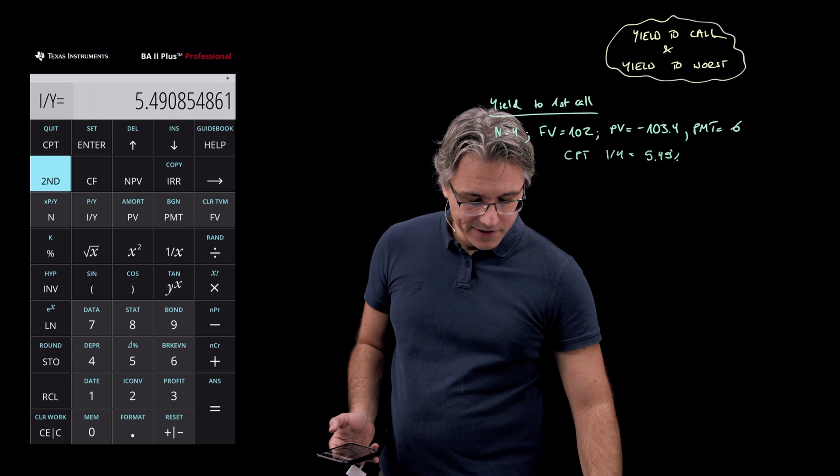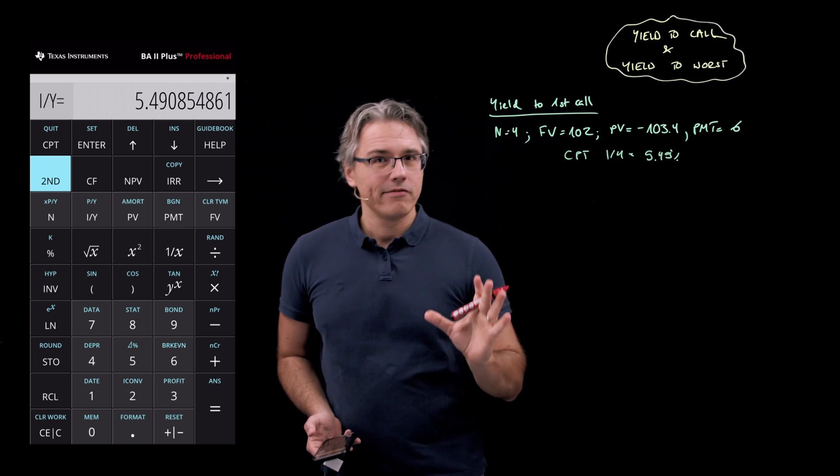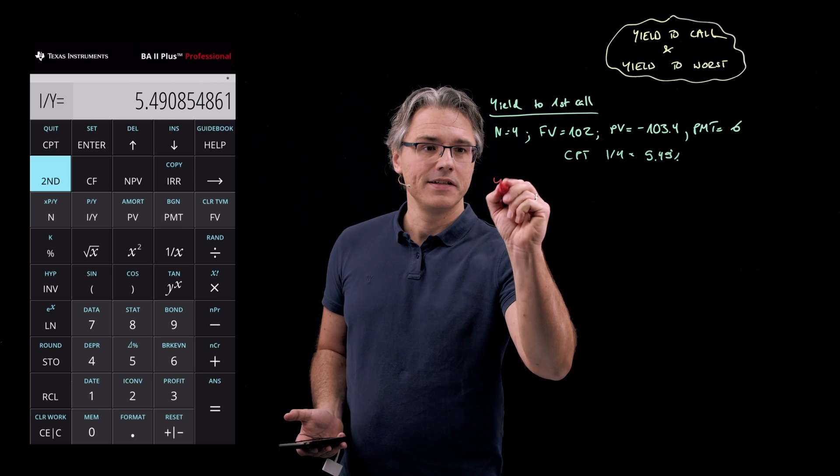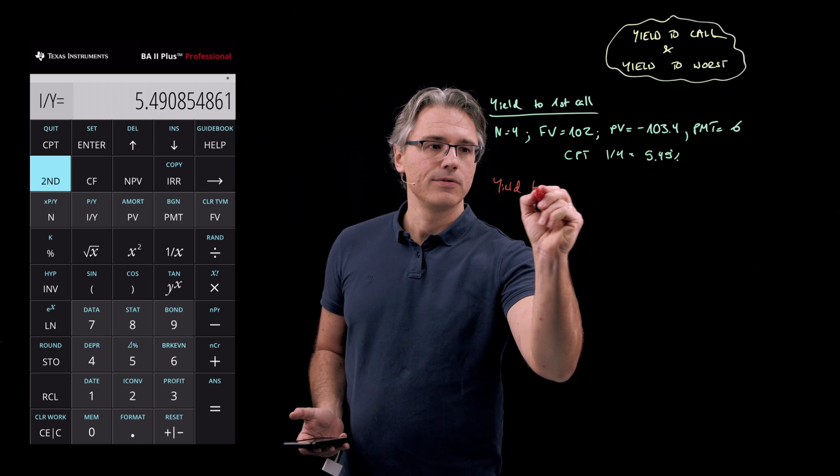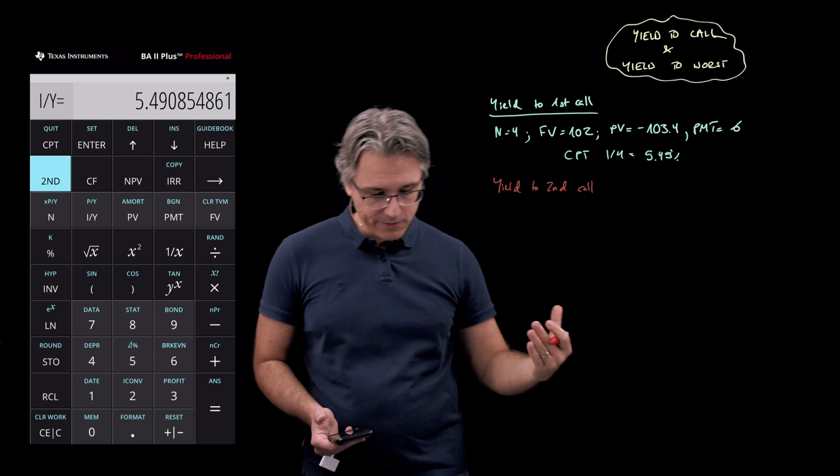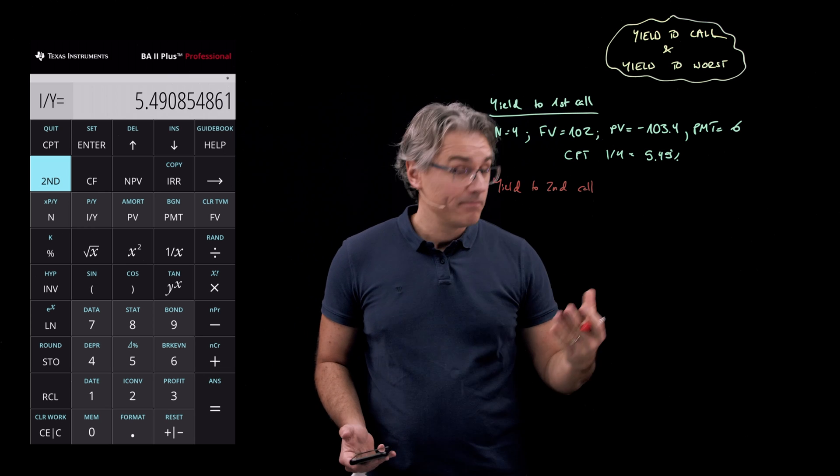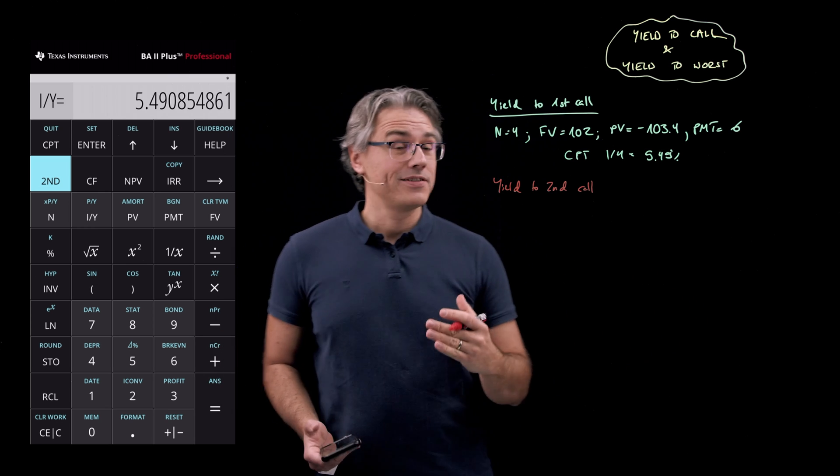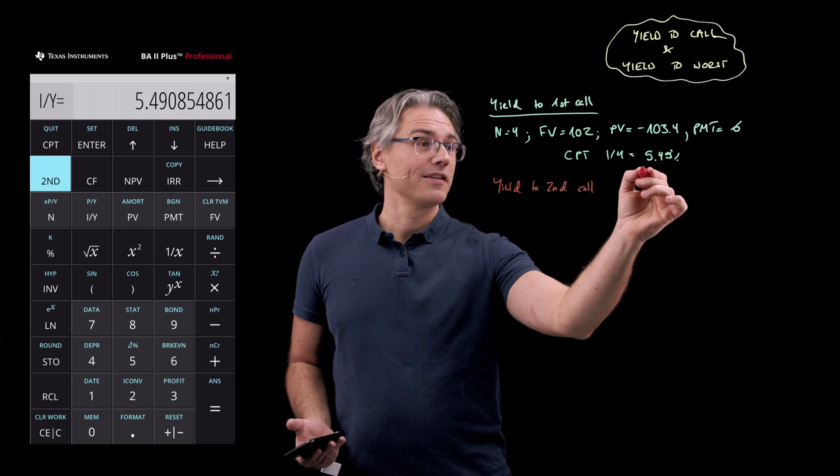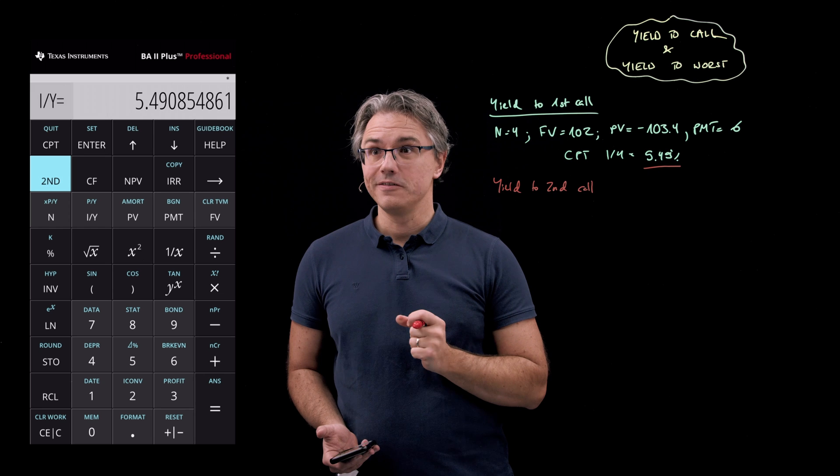Now let's compute the yield to worst, but we don't know what it's going to be yet. We've got to proceed with the yield to second call and subsequently yield to third call, yield to maturity as well, and see which one gives the lowest option in terms of the I over Y or the yield to maturity.